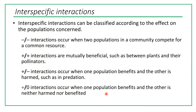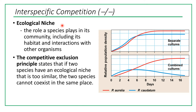Each population occupies its own ecological niche. A niche is not the same as a habitat — niche is the role a species plays in its community, including its habitat and all interactions with other organisms. The competitive exclusion principle states that if two species have an ecological niche that is too similar, the two species cannot coexist in the same place at the same time. This graph shows the population density of two microscopic protists — Paramecium aurelia and Paramecium caudatum.